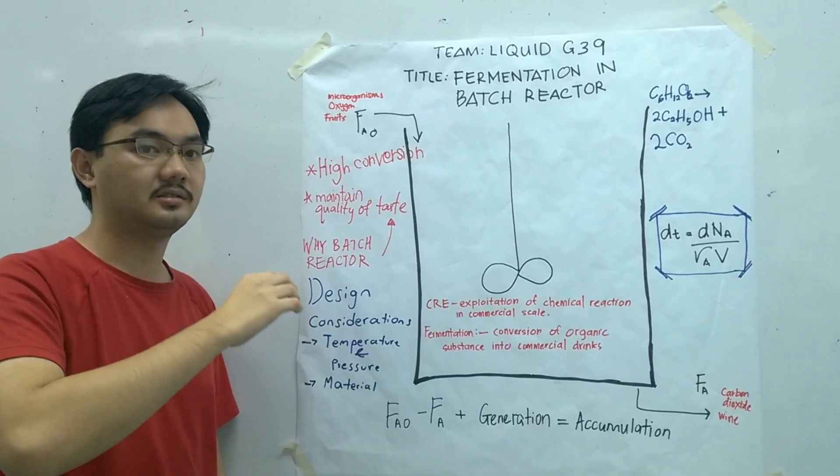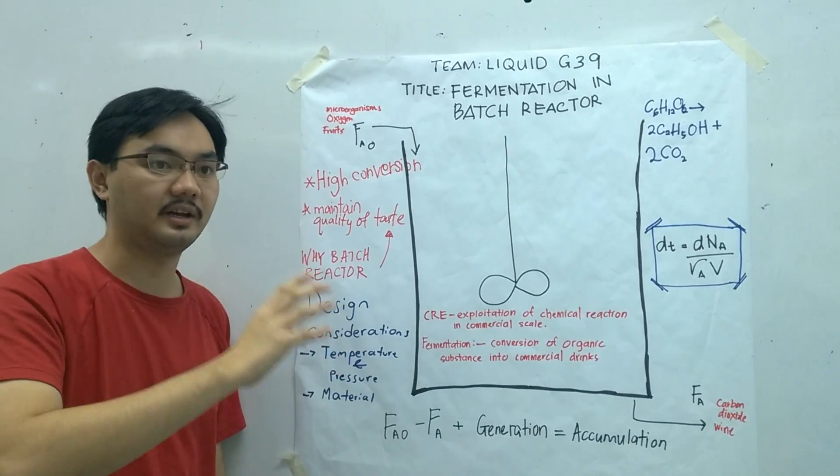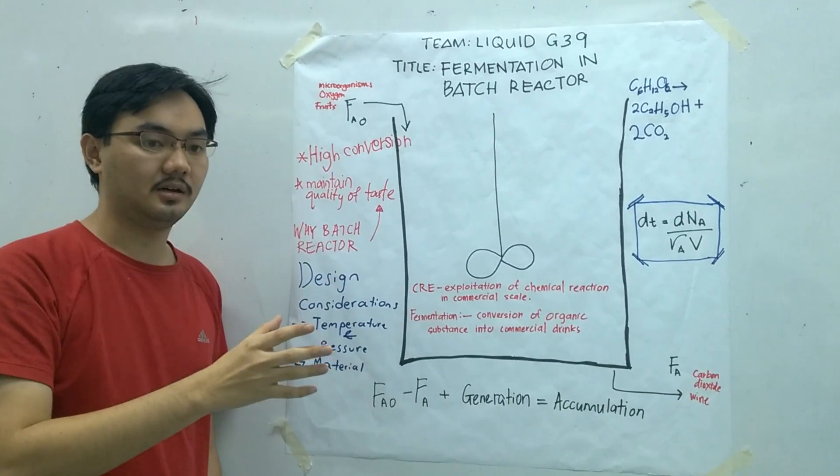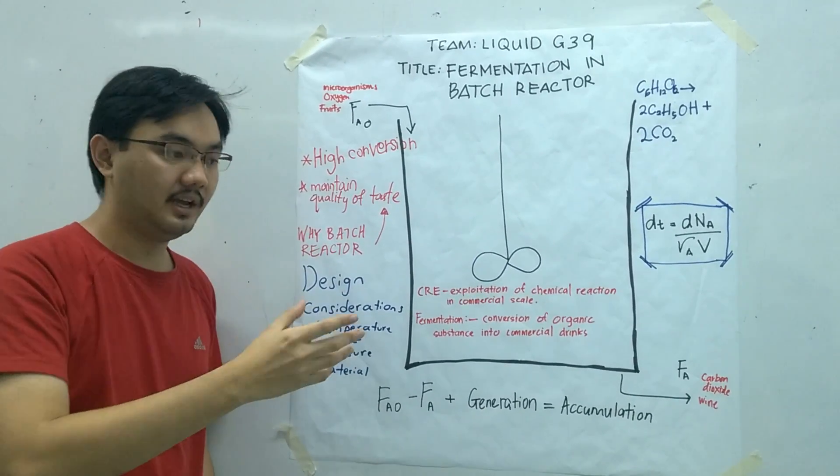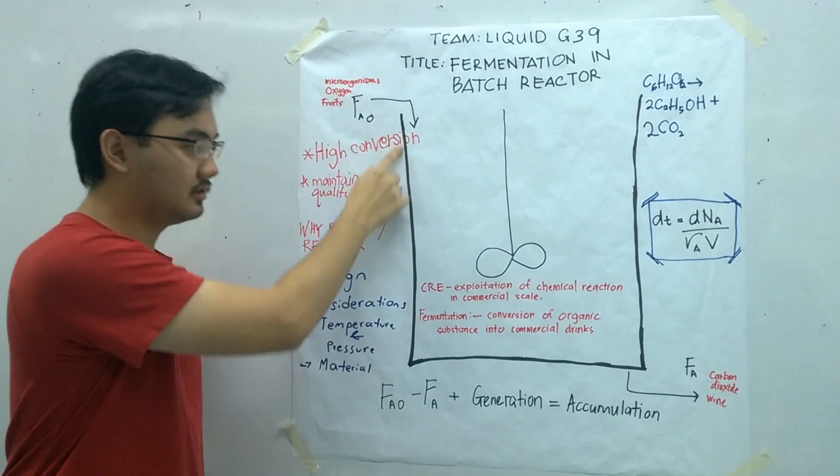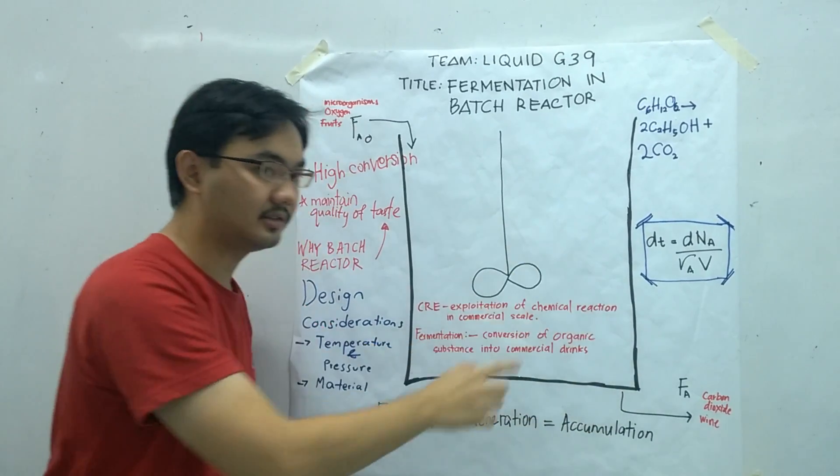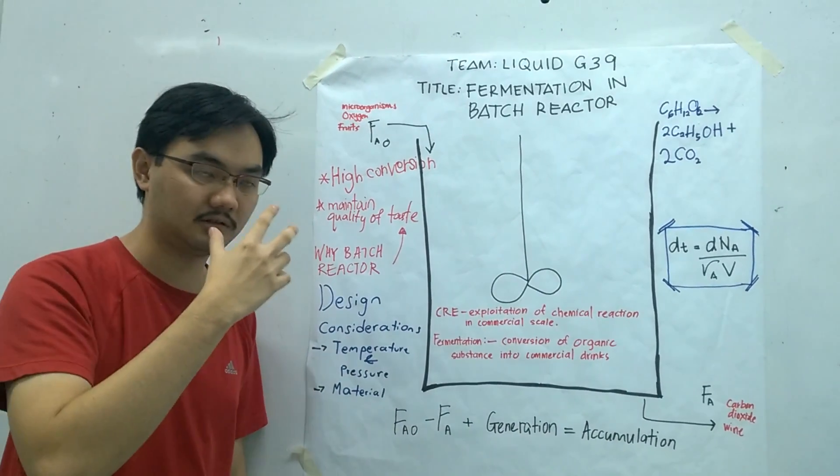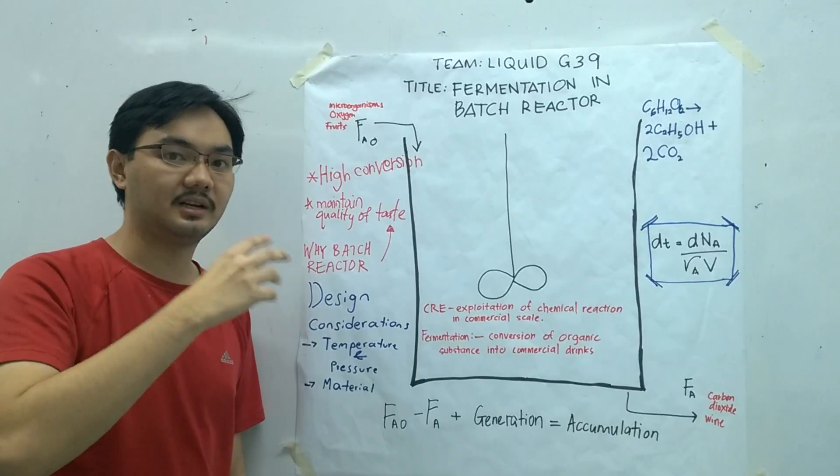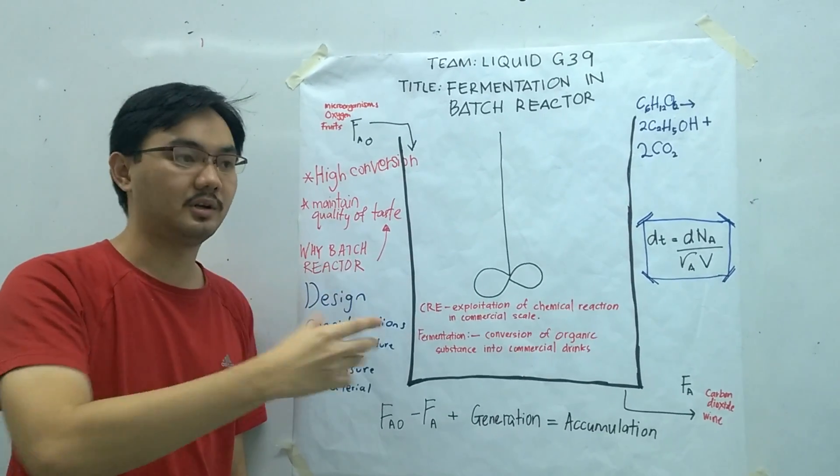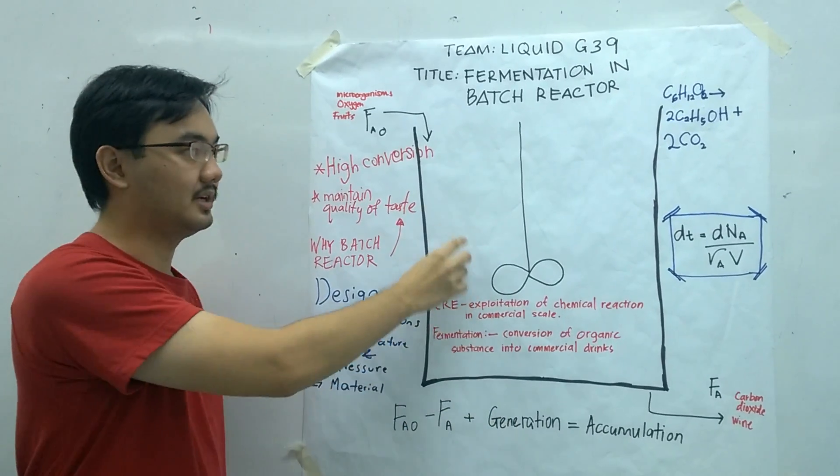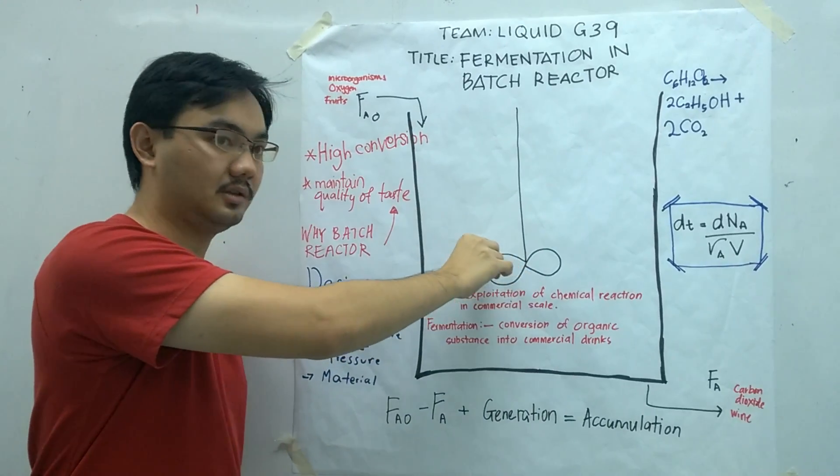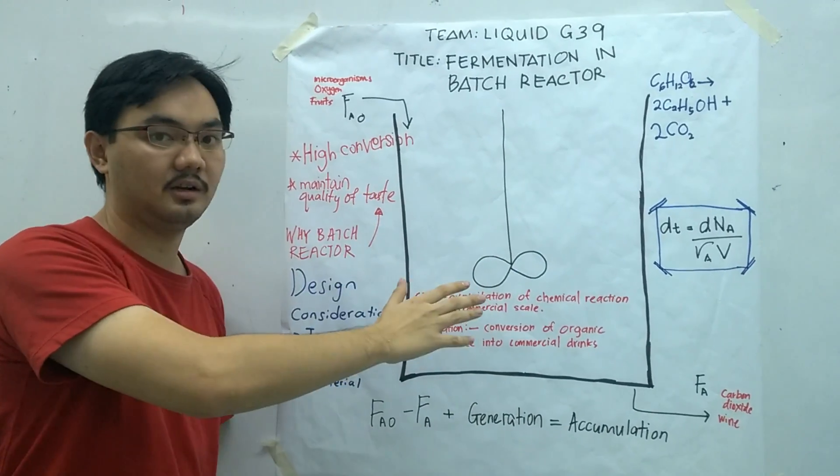At higher pressure, certain microorganisms will die off and be unable to produce the wine, so it will affect the taste. And for the material, the walls of the batch reactor itself can be made with inert material that does not cause poisoning because this is a commercial drink. We do not want the metal to leach into the wine, so that we can sell it off at higher quality.